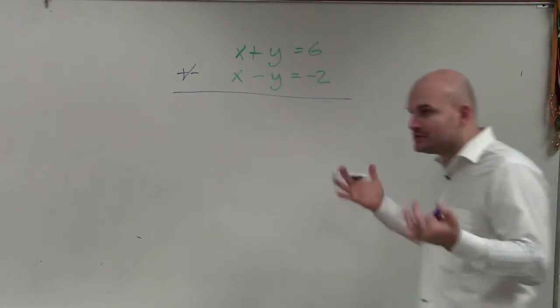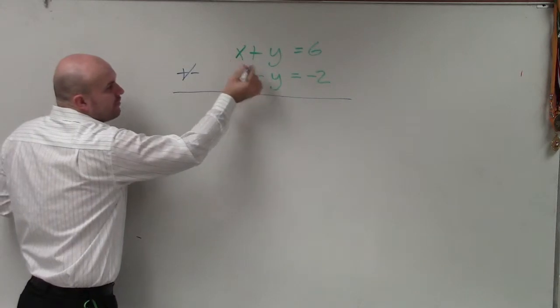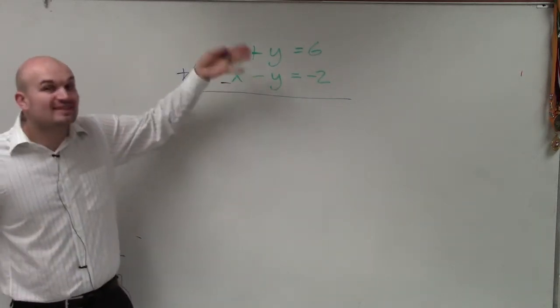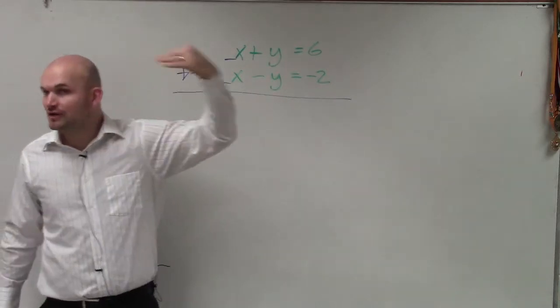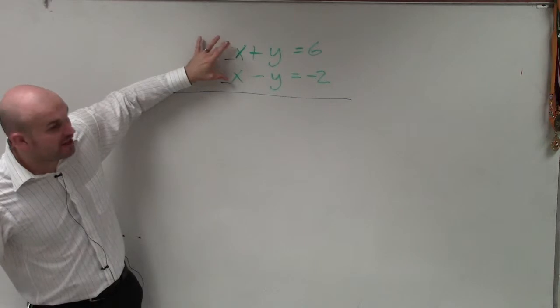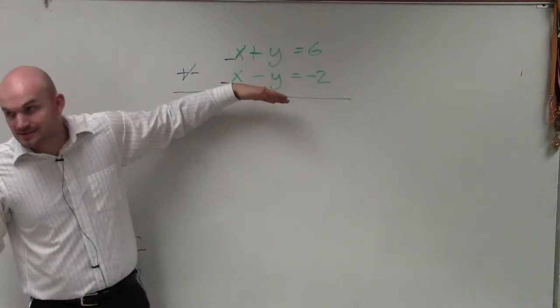Now, we only want to do adding and subtracting two equations when you notice that the coefficients of the same variable are the same. So I'll let you know of a couple things you're going to want to do first. First of all, you're going to want to make sure your variables are aligned. X's over x's, y's over y's. All right?